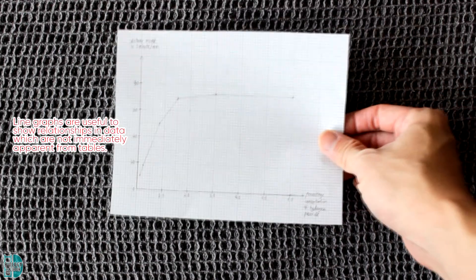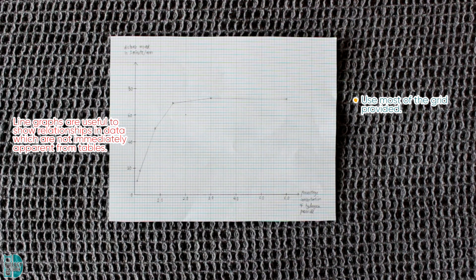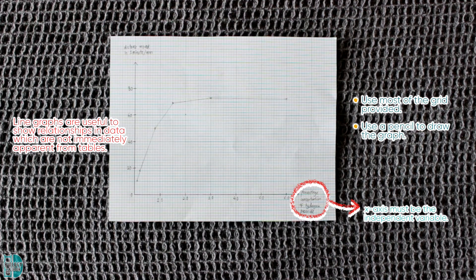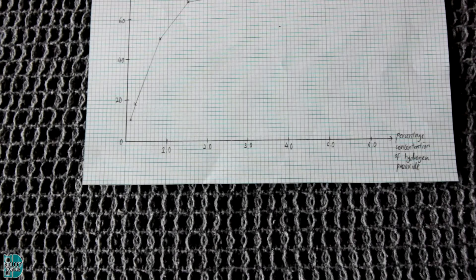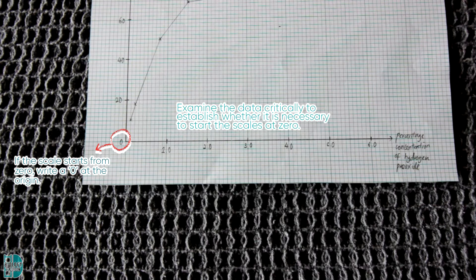Line graphs are useful to show relationships in data which are not immediately apparent from tables. Use at least half of the grid provided and always use a pencil. The independent variable should always be plotted on the x-axis, while the dependent variable should be on the y-axis. If the scale starts from 0, the origin should be indicated with a 0. However, the data should be examined critically to establish whether it is necessary to start the scale at 0.